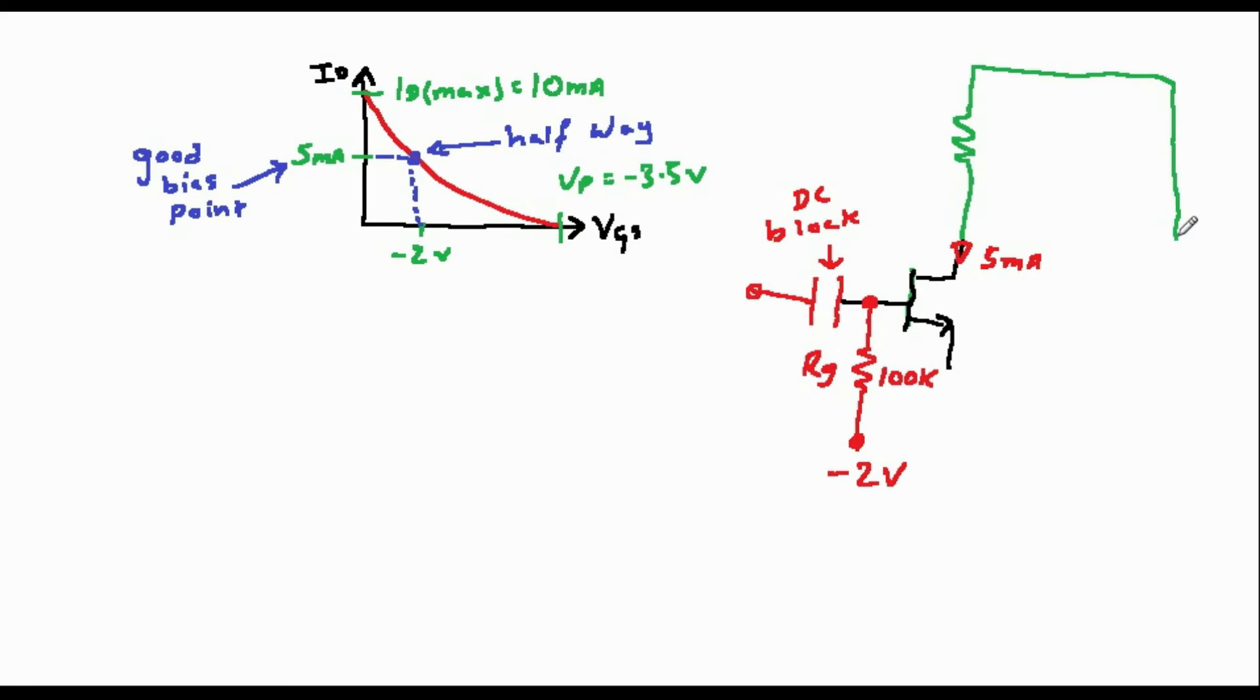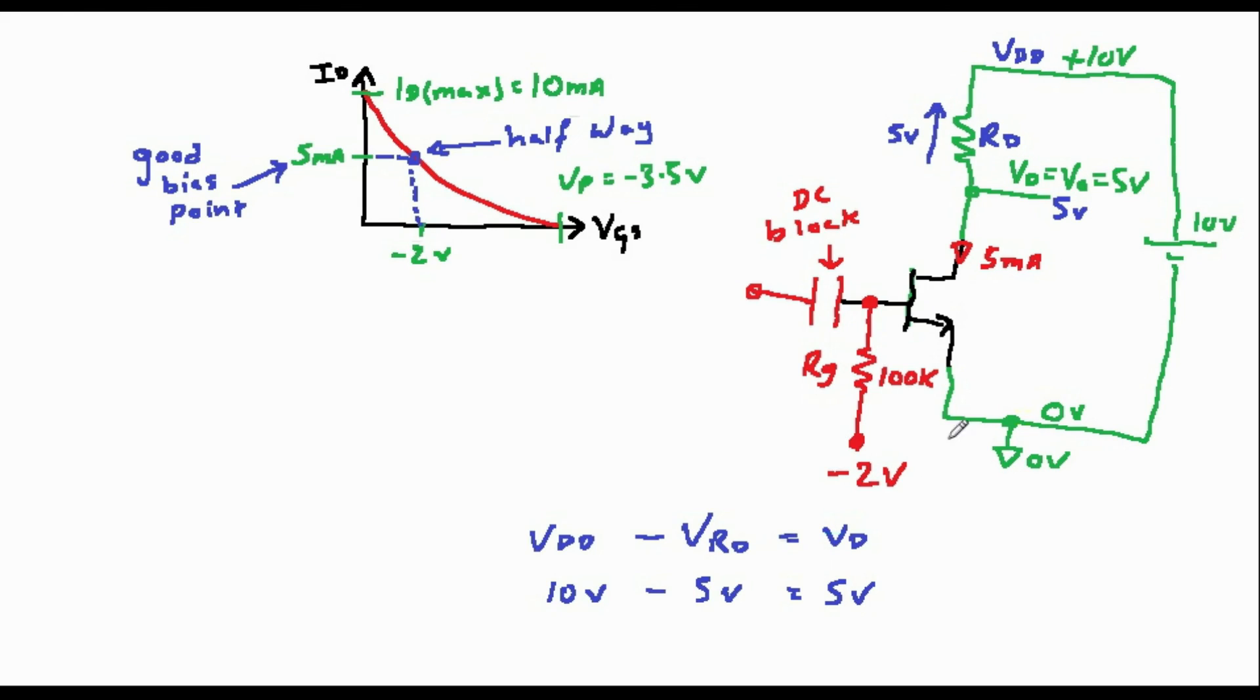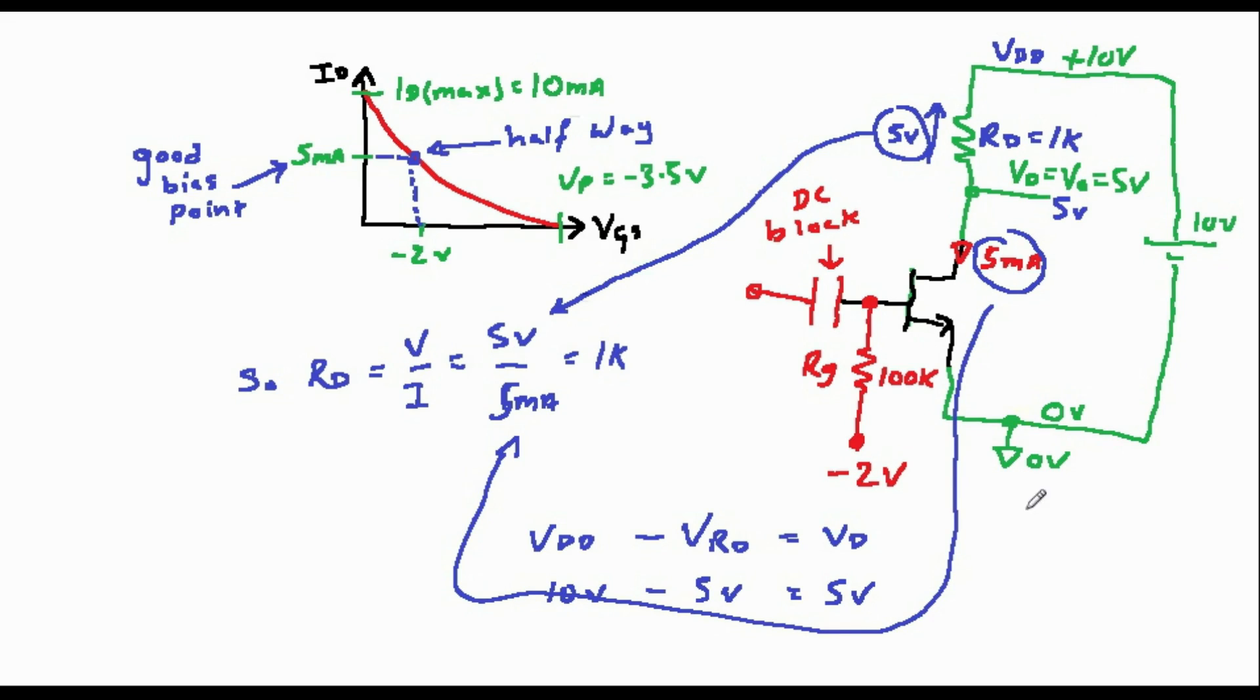Next, let's connect up a source drain circuit and add in a drain resistor. Now we know we'd like VD to be 5 volts as this is halfway between the power supplies. And we also know that ID is equal to 5 milliamps from our graph. So this means that we need to drop 5 volts across the drain resistor, which means that we have RD is equal to V over I is equal to 5 volts divided by 5 milliamps, which is equal to 1k.